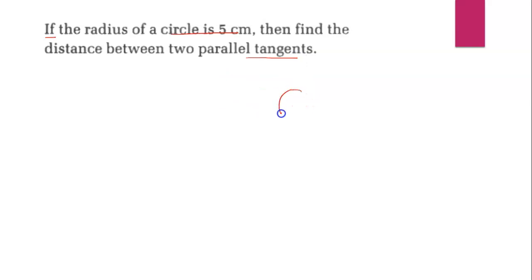So first of all we draw here the circle and the parallel tangents. Parallel tangents: one tangent is here, and parallel tangents means opposite to this point is here.